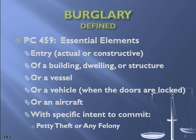Now let's take a look at the elements. The essential elements of Penal Code 459 burglary are: entry — actual entry or constructive entry — of a building, dwelling, or structure, or vessel or vehicle when the doors are locked, or an aircraft, with specific intent. The section tells us it must be the intent to commit petty theft or any other felony.